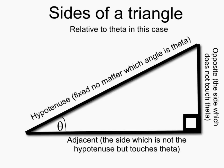To know trigonometry, one must first know the names of the sides of a triangle, which is relative to theta in this case. The hypotenuse is fixed no matter which angle is theta. The opposite side is the one which does not touch theta and the adjacent side touches theta, but it's not the hypotenuse.